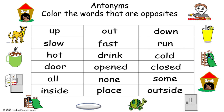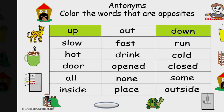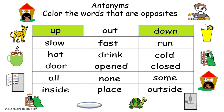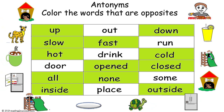Now have kids color the words that are the opposites. Explain to kids that in each row there are three words. In this example we have up, out, and down. Kids are to decide which two words are antonyms and then color those words in. In our example, the first word colored in is up and the second word colored in is down. Out is not an antonym, so it is not colored in. This is a completed example. The sets of antonyms are up/down, slow/fast, hot/cold, opened/closed, all/none, and inside/outside.